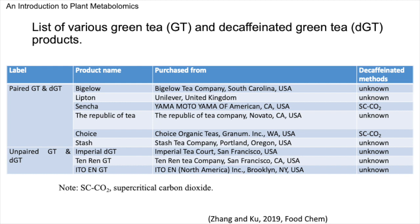There are several methods for decaffeination of teas. The most frequently used methods involve solvent extraction, such as with ethyl acetate or supercritical carbon dioxide. Supercritical carbon dioxide is a particularly innovative method for the selective removal of caffeine, although it is more expensive. When purchasing green teas and decaffeinated green teas from the same company, I label them as paired GT and DGT; from different companies, they are called unpaired GT and DGT. Most often, the decaffeination method is not labeled on the product, but the supercritical CO₂ method is usually labeled as it is considered a green and safer method for consumers.